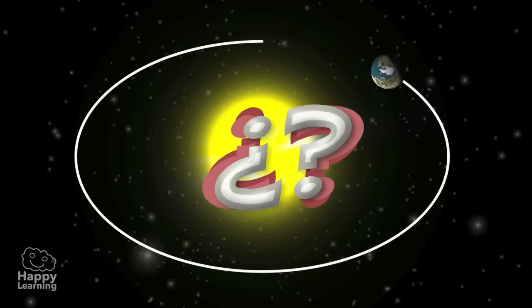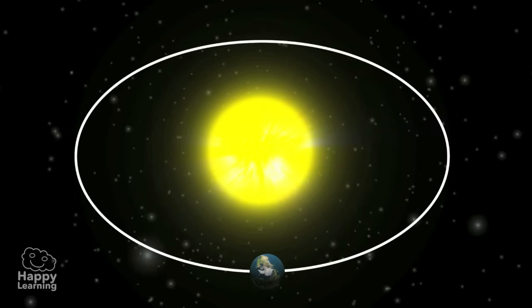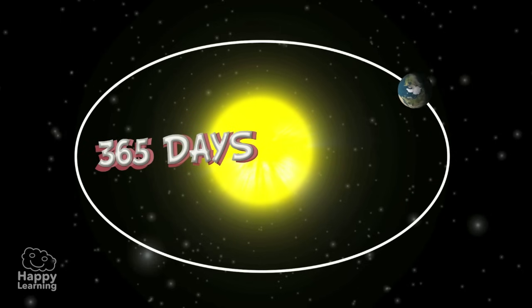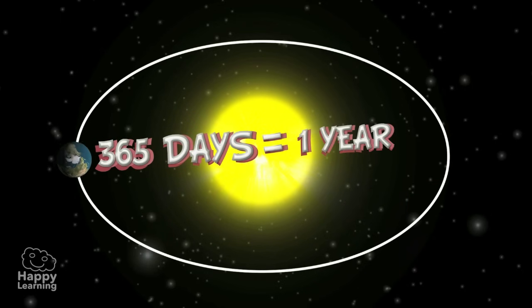Do you know how long it takes the Earth to make a complete revolution around the Sun? Well, it takes 365 days. Exactly one year.